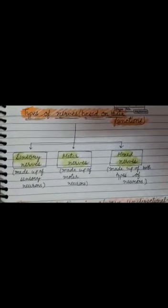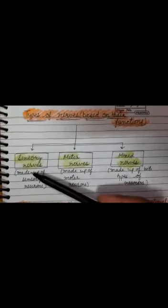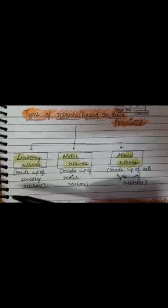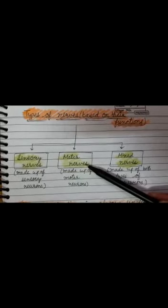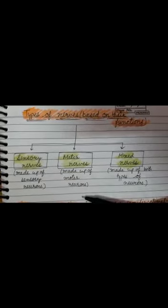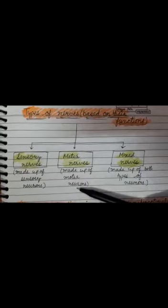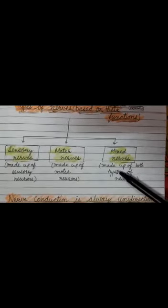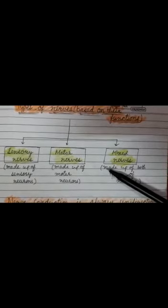There are three types of nerves based on function. First: sensory nerves, made up of sensory neurons, which carry impulses from receptors to the central nervous system. Second: motor nerves, made up of motor neurons, which carry impulses from the central nervous system to effectors. Third: mixed nerves, made up of both sensory and motor neurons — they perform both functions and carry impulses to and from the central nervous system.